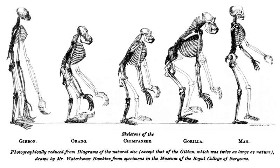Gene flow is hindered by mountain ranges, oceans, and deserts, or even man-made structures such as the Great Wall of China, which has hindered the flow of plant genes. Depending on how far two species have diverged since their most recent common ancestor, it may still be possible for them to produce offspring, as with horses and donkeys mating to produce mules. Such hybrids are generally infertile due to the two different sets of chromosomes being unable to pair up during meiosis. In this case, closely related species may regularly interbreed, but hybrids will be selected against and the species will remain distinct.